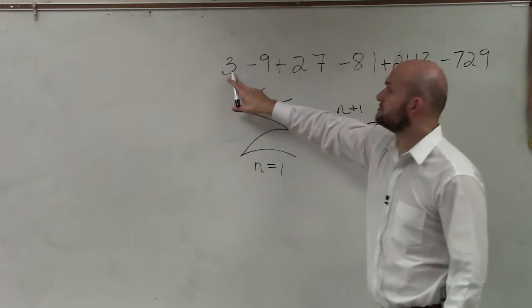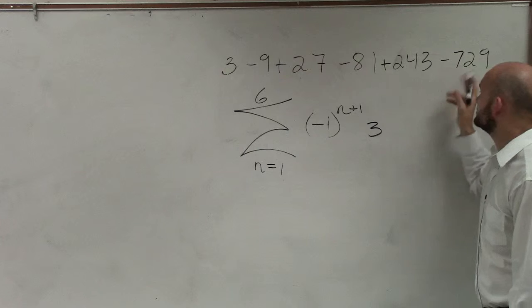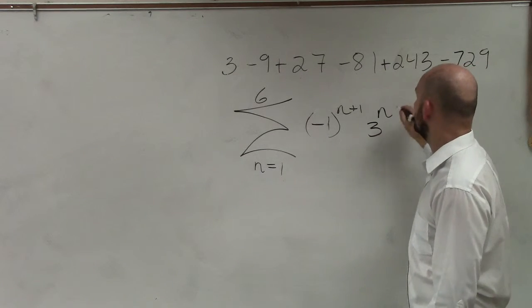So is this 3 to the n? It's 3 to the 1st, 3 to the 2nd, 3 to the 3rd, 4th, 5th, 6th. So your rule is just going to be 3 to the n.